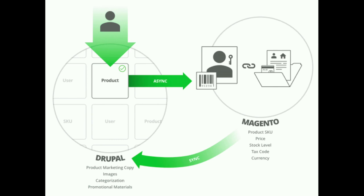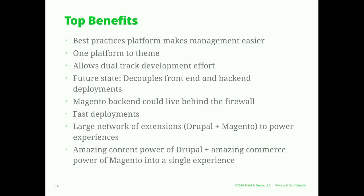We separated the data between the two systems and tried to mirror based on the client's organization. Marketing data that Drupal is good at lives in Drupal. Things like price and SKU live in Magento. Those are synced between the two systems — you only edit it in one place, and it's very clear where that line is and where you need to go to update any given information.